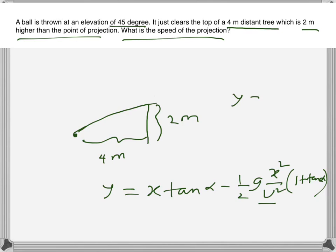what is y - y is 4, sorry y is 2 meters, x is 4 meters, and alpha is 45 degrees so tan alpha is of course just 1, tan alpha is 1, and g is 9.8 meters per second squared. So if we just plug in the values it will be